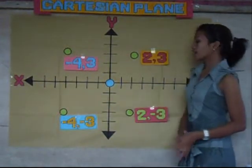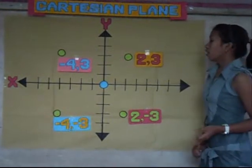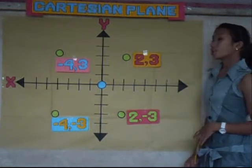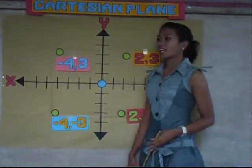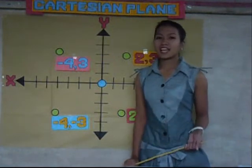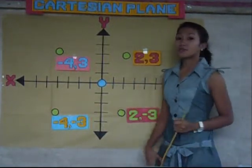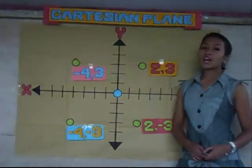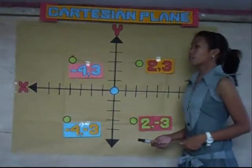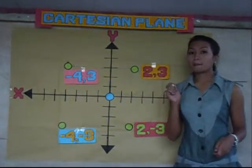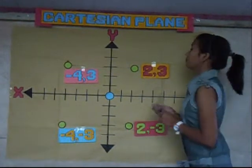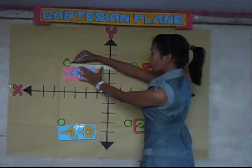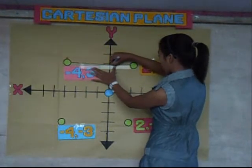There we have it — we have plotted all 4 ordered pairs. Next, we are going to connect all of the points using a marker and a ruler. Let's find out what form these four ordered pairs will make.